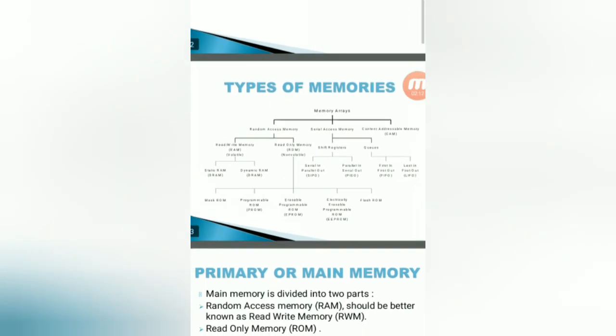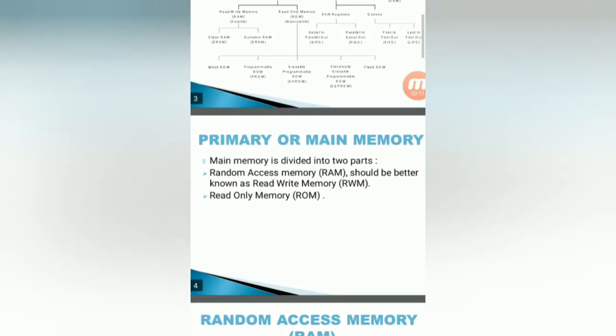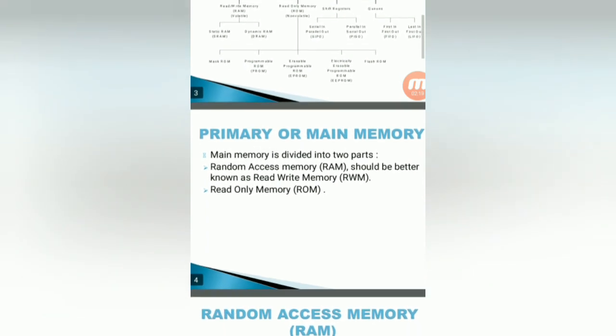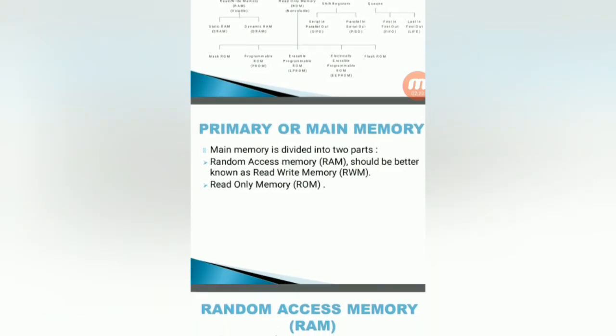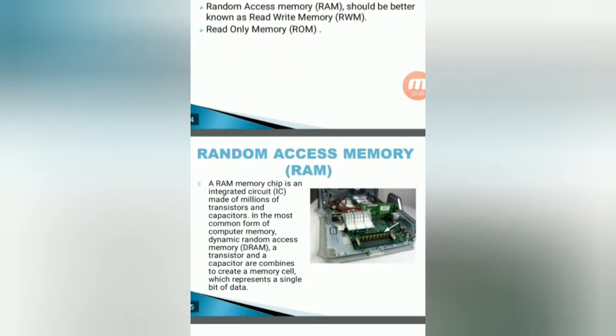So these are the classification of memories. Main memory or primary memory is divided into two types: one is random access memory and the other is read-only memory. So random access memory chip is used to store the data temporarily during program execution time. It consists of millions of transistors and capacitors.